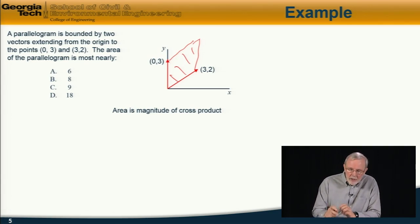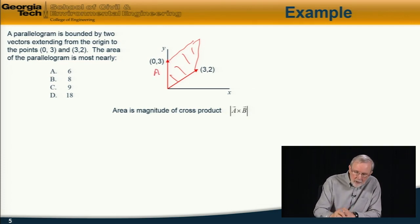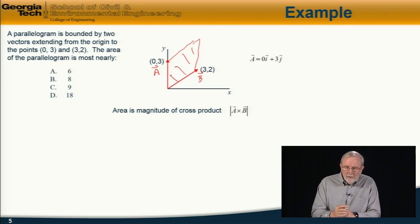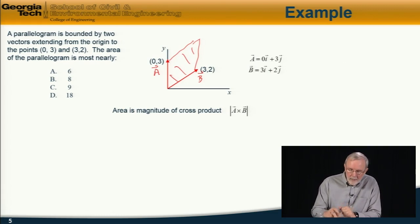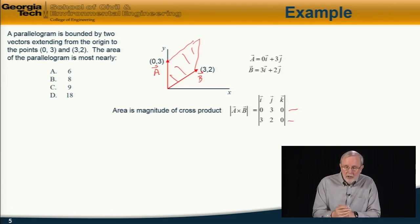So the first step is to write those two as vectors. And I'll call the vertical vector here A and this vector B. So the vector A is simply 0i plus 3j. The vector B is 3i plus 2j. So now I can form the cross product. Same way again, i, j, k. And the vector A is 0, 3, 0. The vector B is 3, 2, and 0.